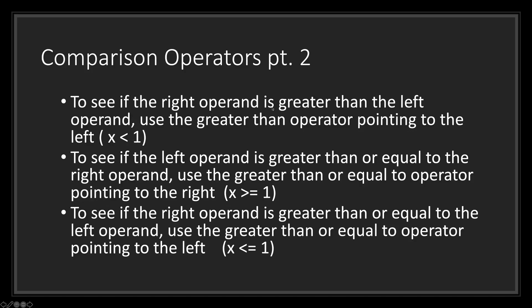To see if the right operand is greater than the left operand, use the greater than operator pointing to the left. The greater than operator for the right operand will be using the left arrow symbol. What you are trying to convey is if the right operand one is greater than the left operand x. If x is zero, then this operator will return true, because one will be greater than zero. However, if x is one or any number greater than one, then this operator will return false.